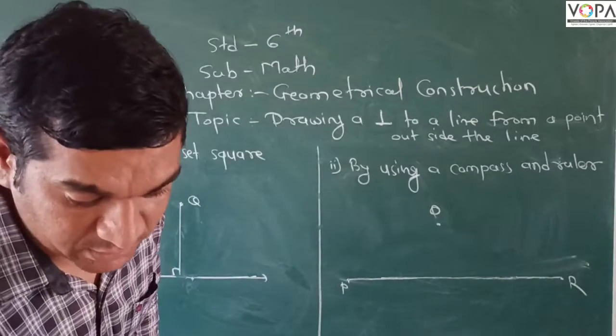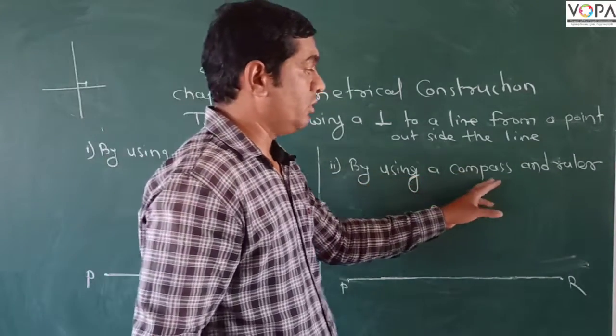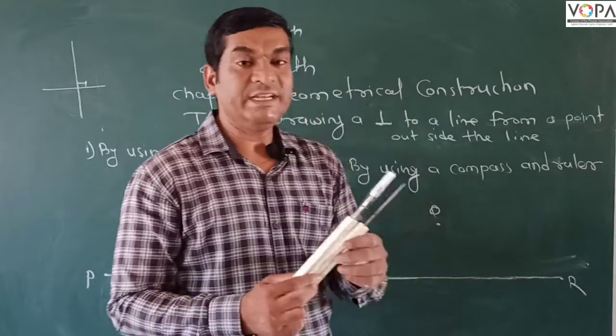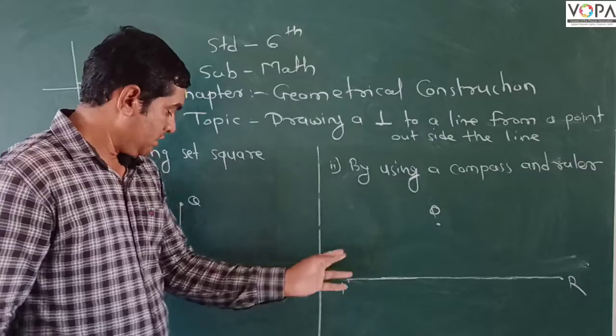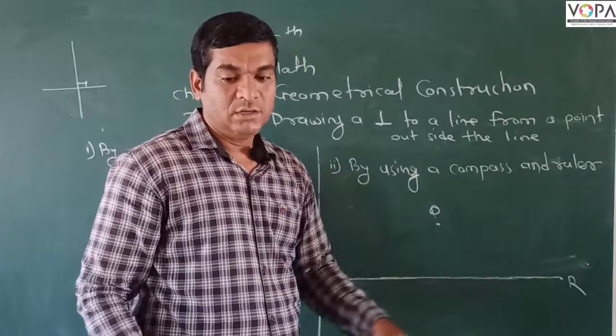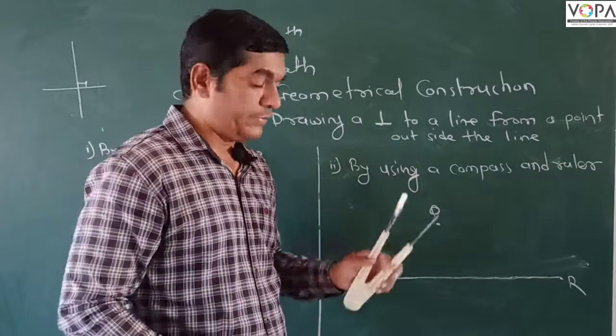In another method, by using a compass and a ruler. This is a compass. By using this compass, we want to draw a perpendicular to the line PR. So how should we draw the perpendicular?